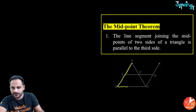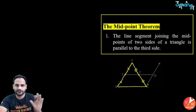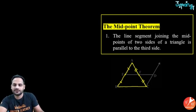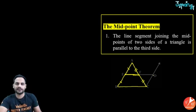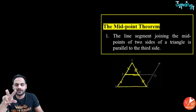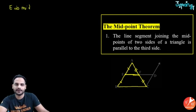The midpoint theorem states: in triangle ABC, if E is the midpoint of AB and F is the midpoint of AC, then the line EF joining those midpoints will be parallel to the third side BC and half of it.